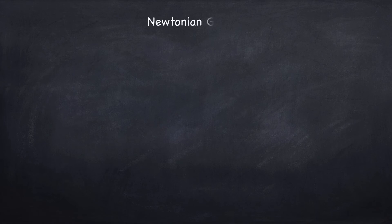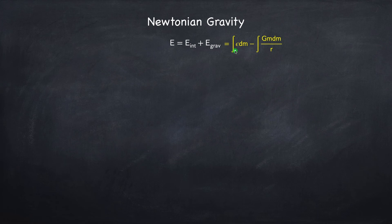In the case of Newtonian gravity, the energy will be defined as the internal energy plus the gravitational energy. So epsilon is the internal energy per unit mass, and this is the gravitational energy, it's simply taken from Newton's law of gravitation.